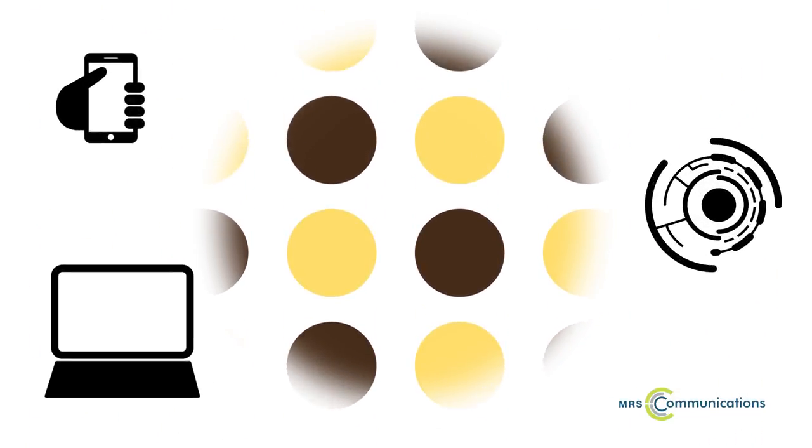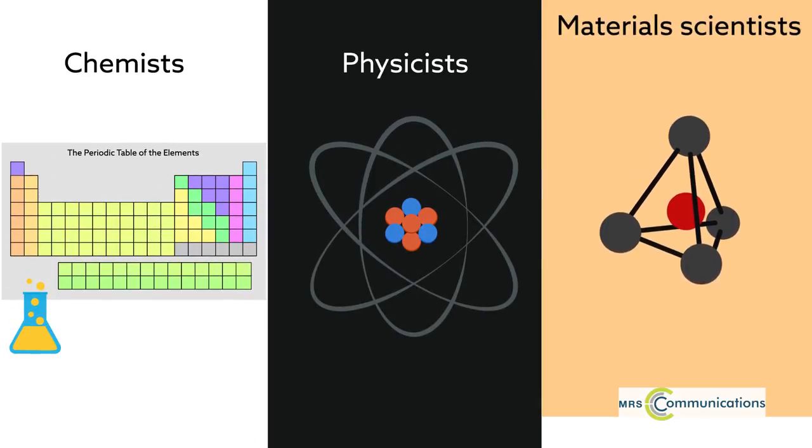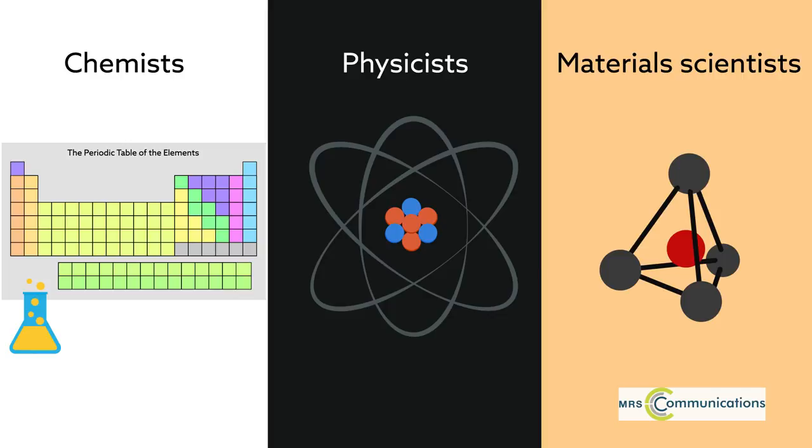Researchers are still learning how melanin behaves when surrounded by the machinery that makes useful electronics work. But continued efforts from chemists, physicists and material scientists are likely to result in exciting new applications for this highly versatile molecule.